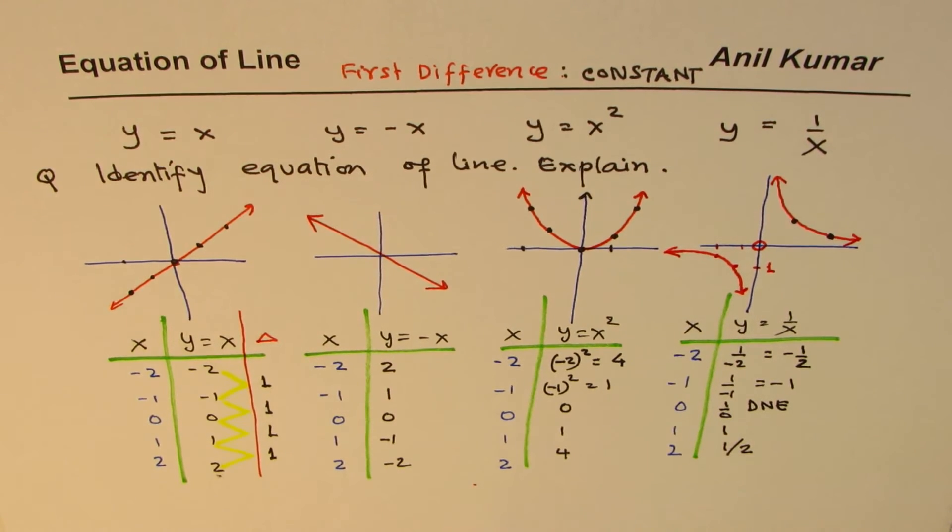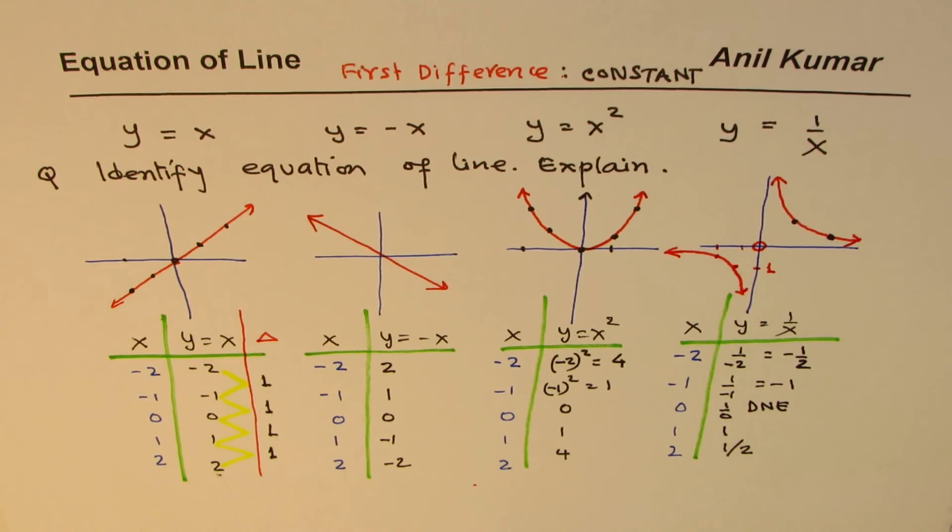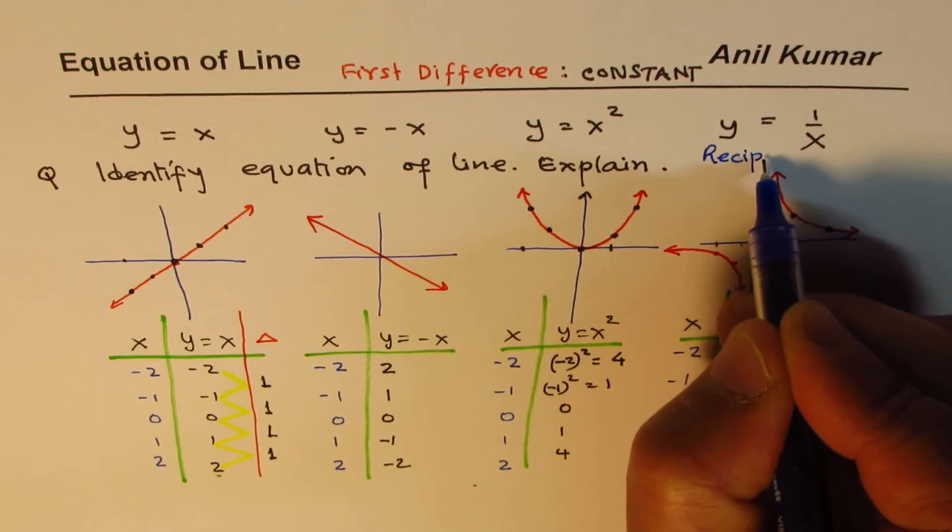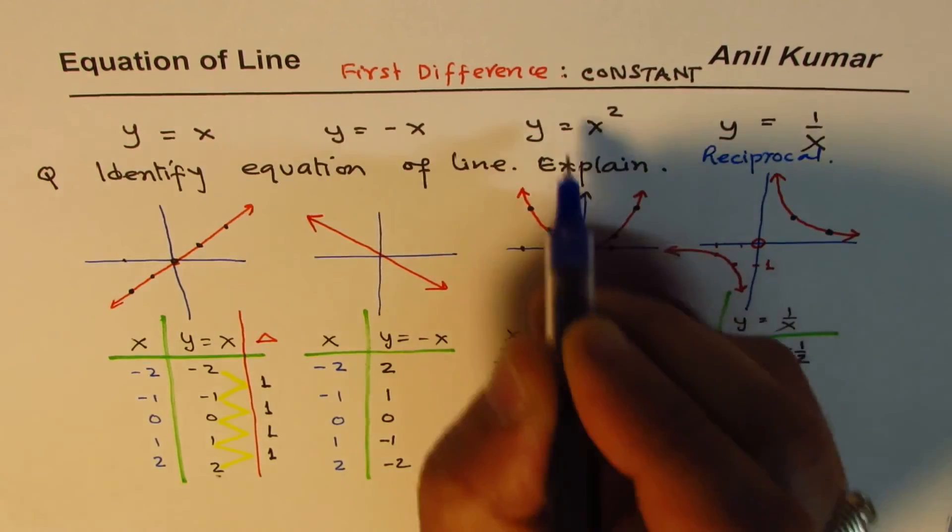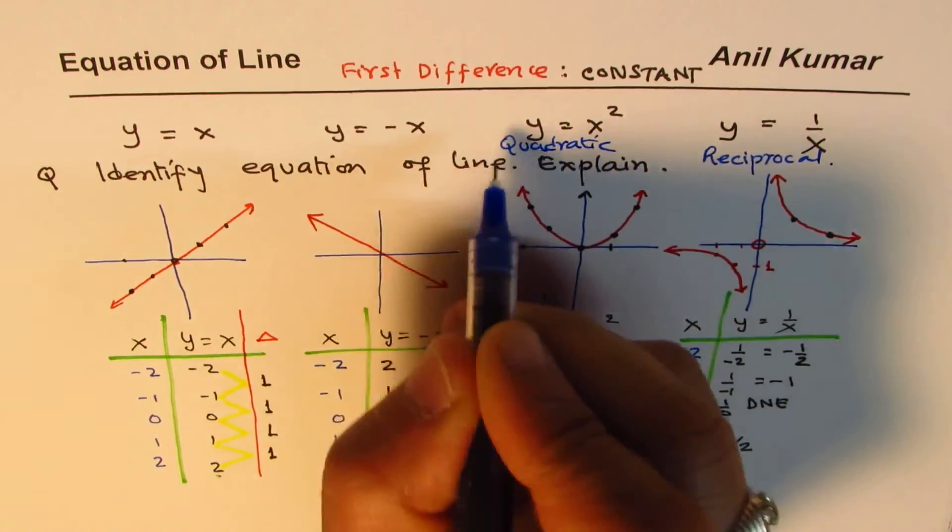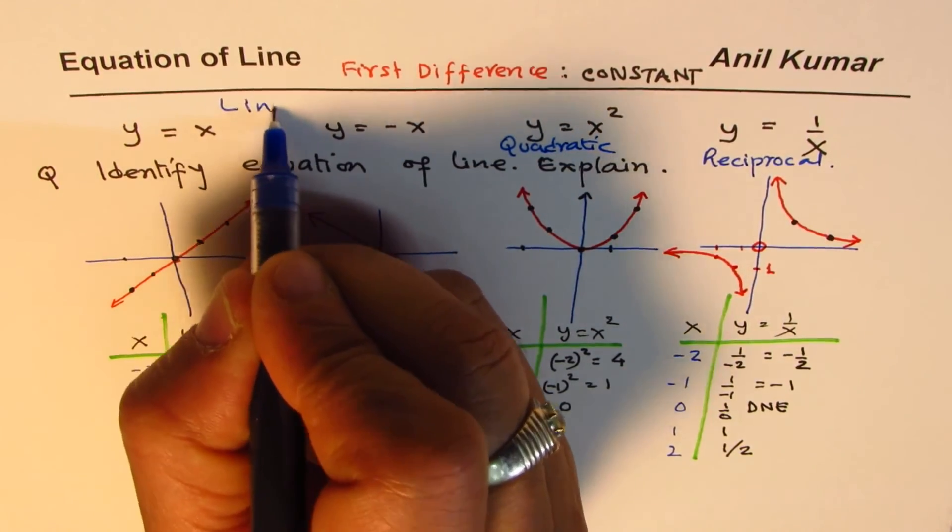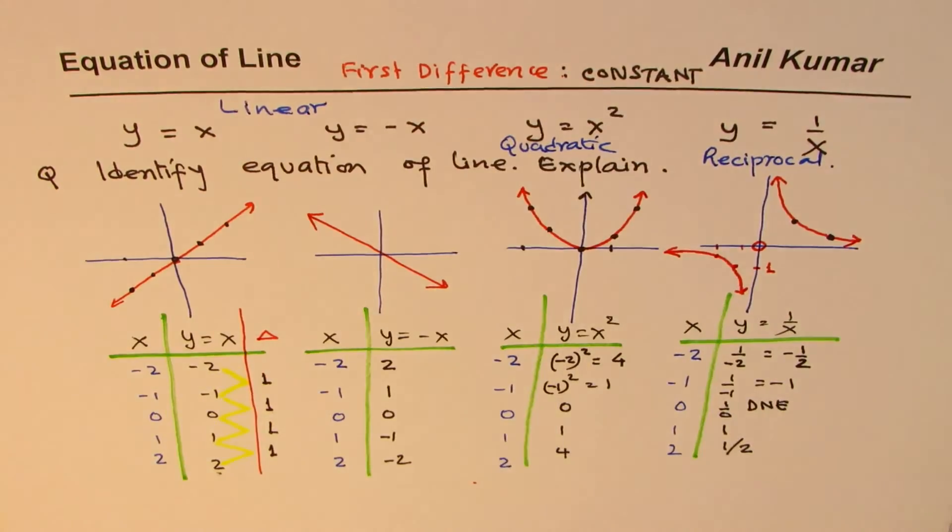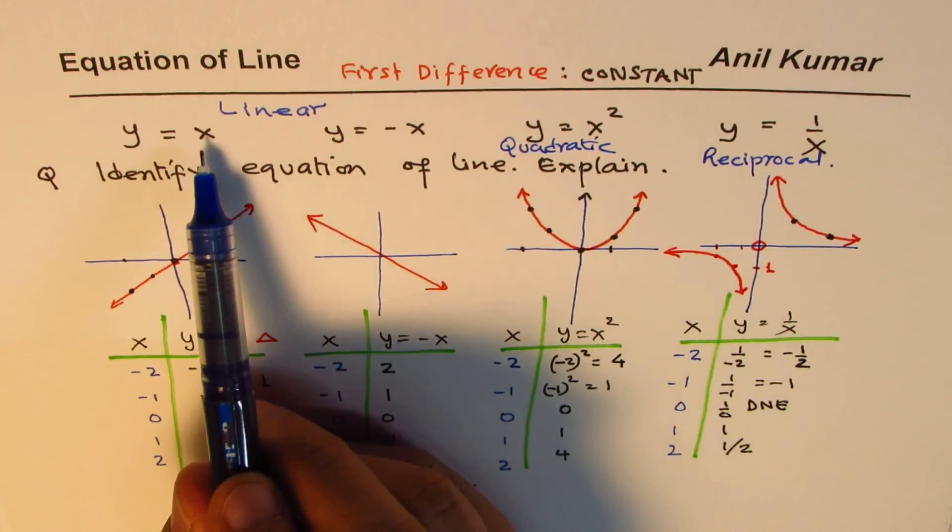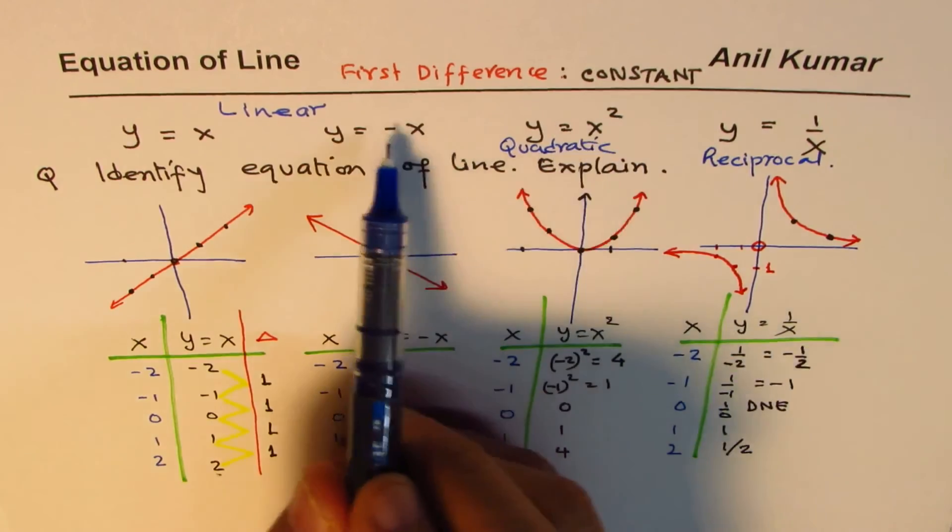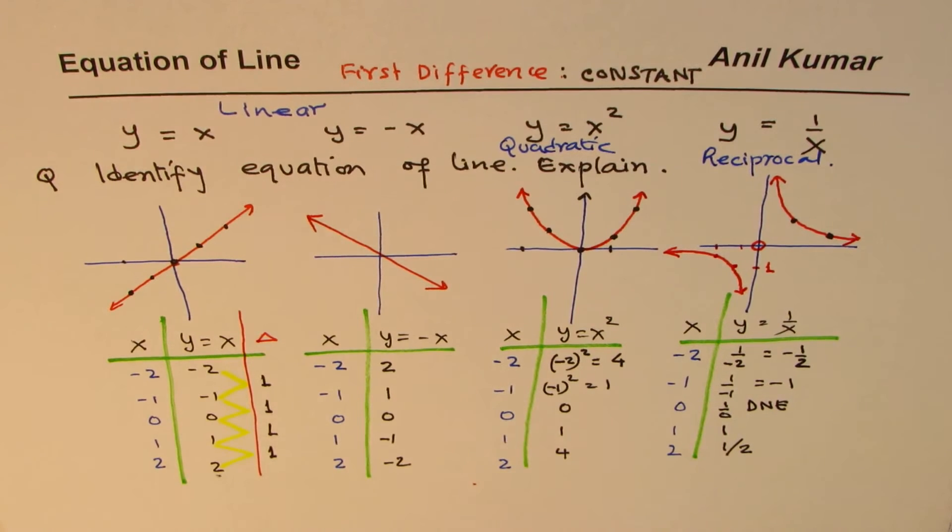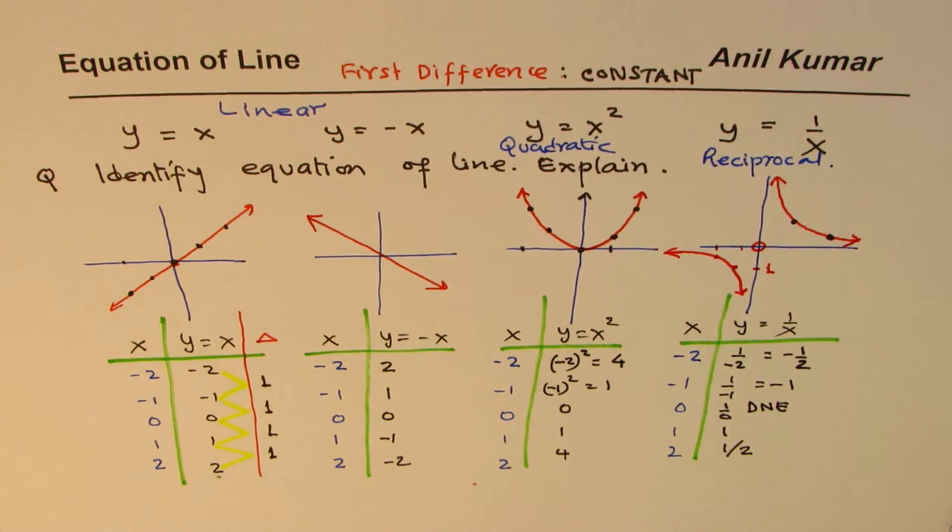To really draw this graph, we need more values. Let's be clear about it. It's symmetric like this. Ultimately, you get a graph like this. And this function is called reciprocal function. And this one is quadratic. And the first two are linear. What we really observe here is that you only get a straight line if X is without any power or if X is not in the denominator. So, broadly speaking, this is what you get.